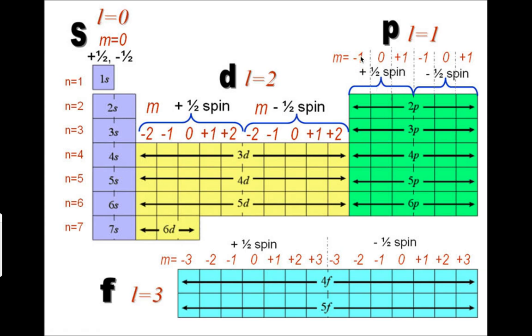So 3, 1, negative 1, half. Those are the four quantum numbers for aluminum. Now if we were to choose, like chlorine, you would have 2, and then again P is 1, so 2, 1, 0, negative 1, half.